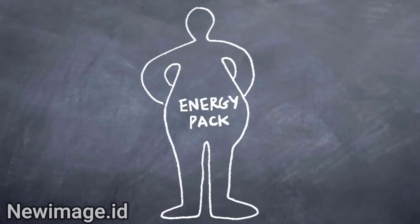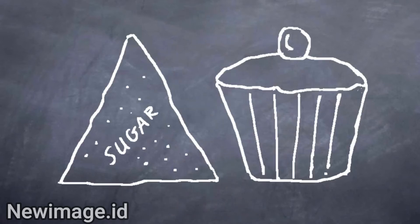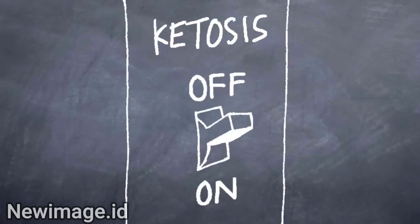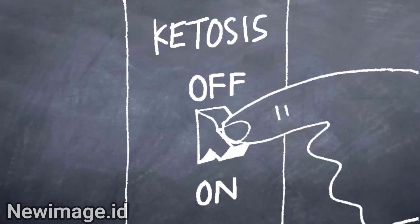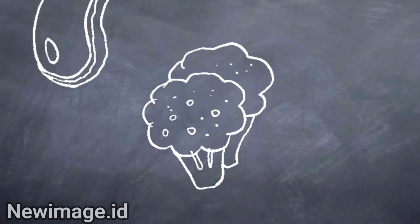The ketosis process is the body using fat rather than sugar and starches as energy and it's easily triggered by cutting out starch and sugar from our diet and switching to a balanced diet of protein and vegetables.